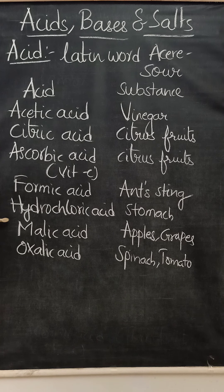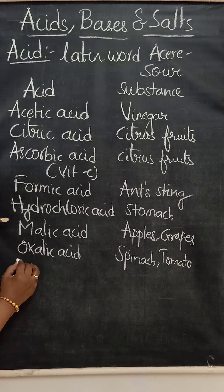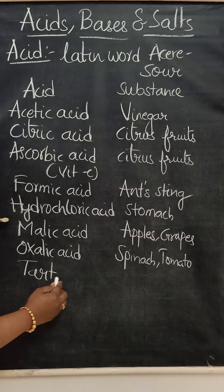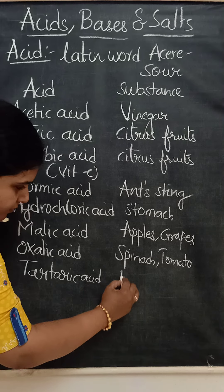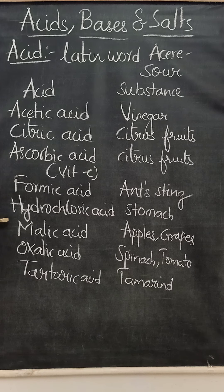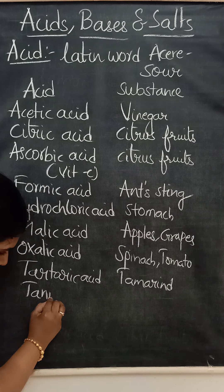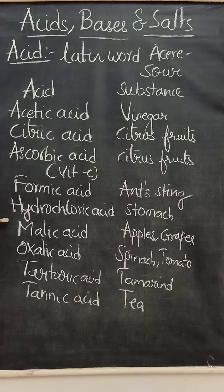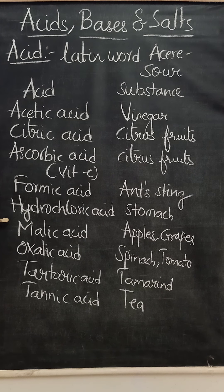Tamarind contains an acid called tartaric acid. Tea contains an acid called tannic acid. All these acids are considered organic acids because they are of living origin. That's why these acids are considered as organic acids.